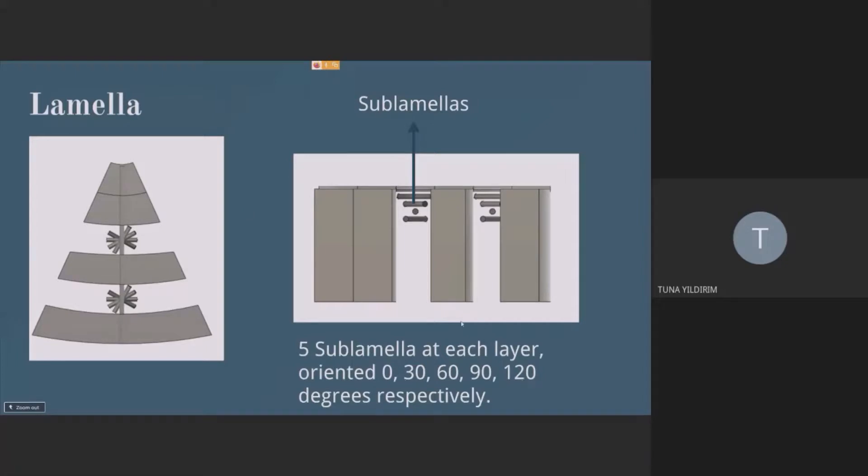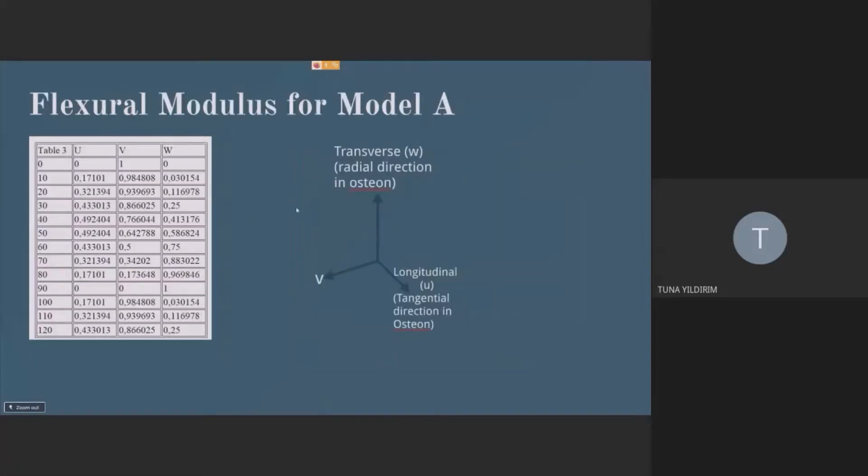These are my orientations about y-axis for 5 sublamellas. And I used the anisotropic contraction vectors to find out which contributes the most to flexural modulus calculations.